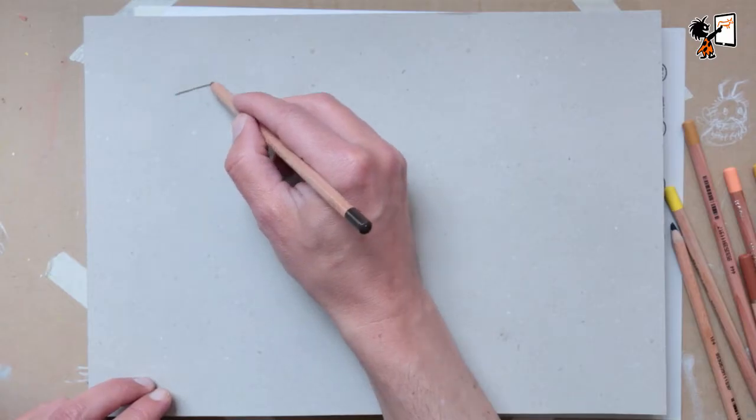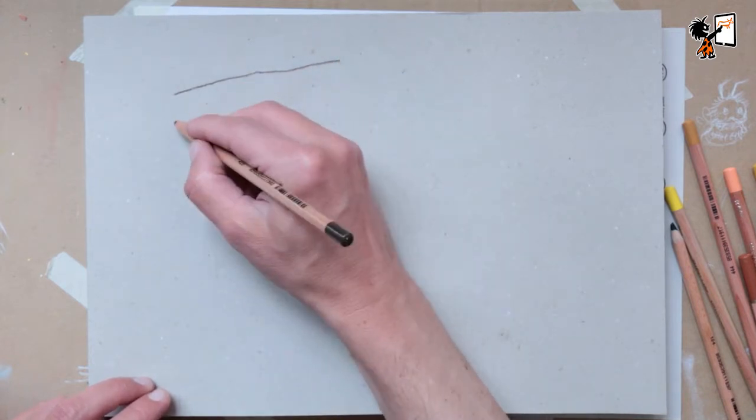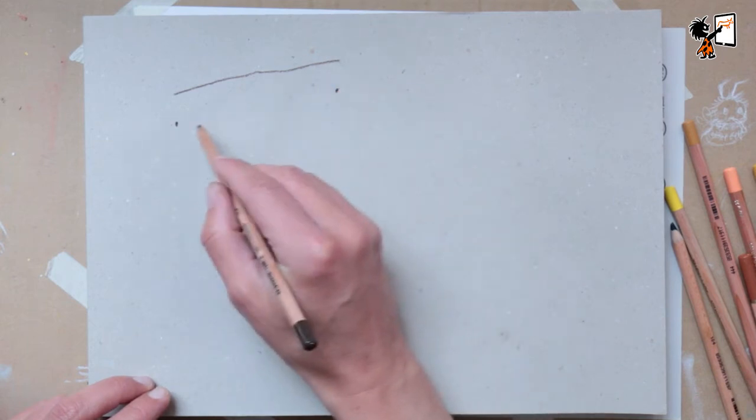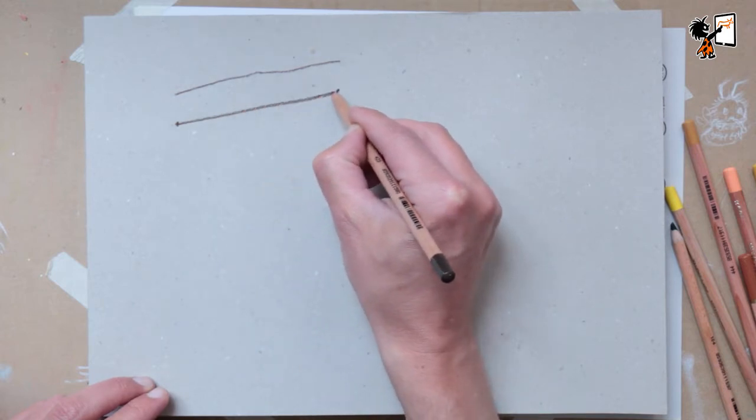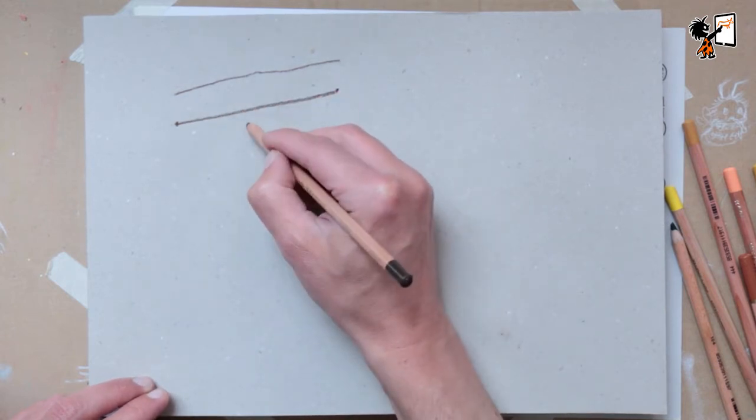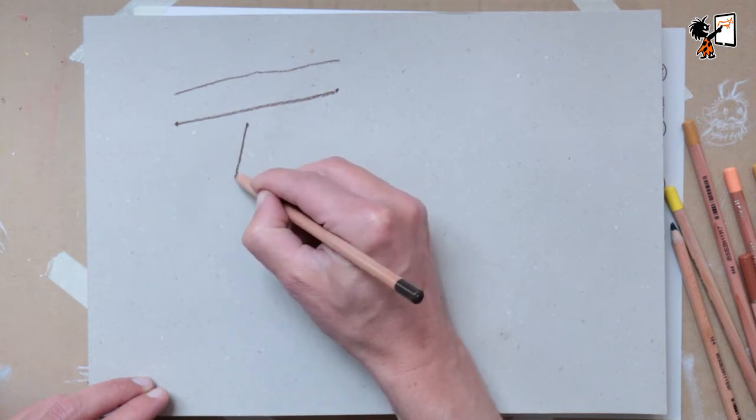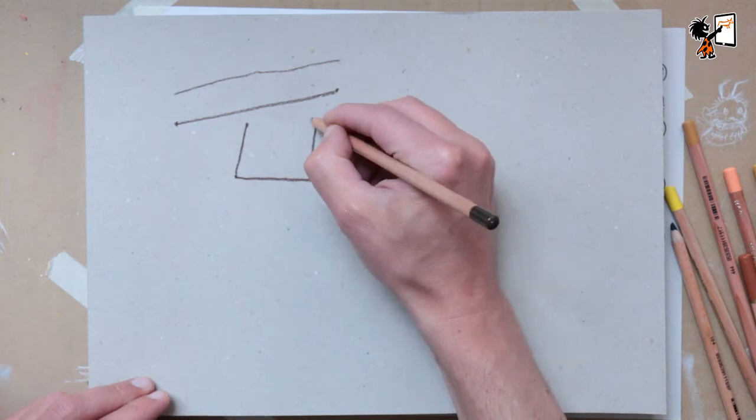Tip number one. If you draw a straight line on paper freehand, sometimes something like this will happen. There's a neat little trick. Draw a point and a second point, and don't watch the point on your pencil but the second point while you're drawing your line. In this way, you can draw straight lines freehand. If you want to draw a real straight line, use a ruler.